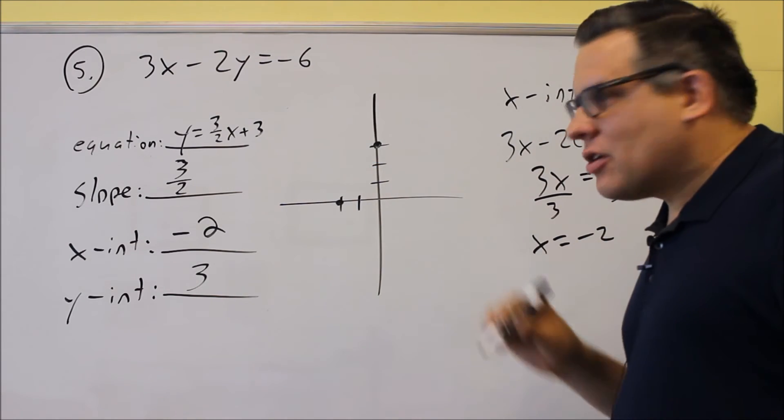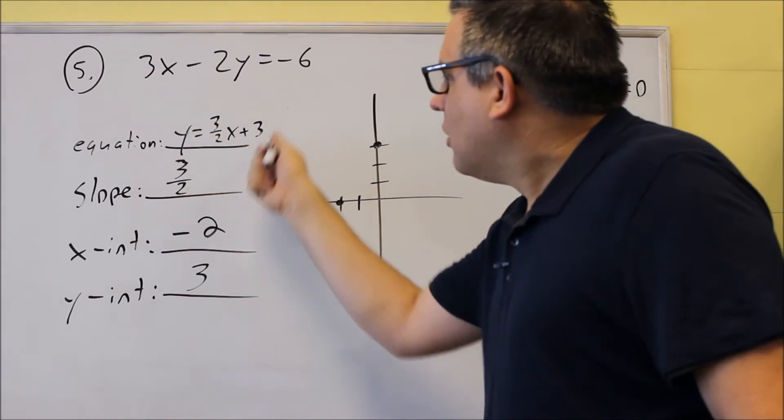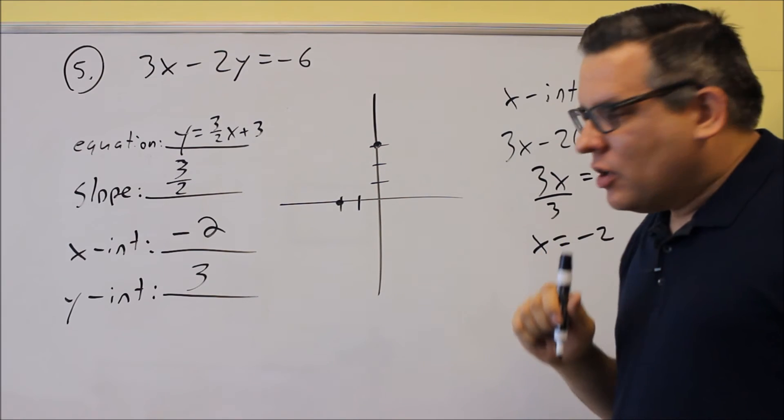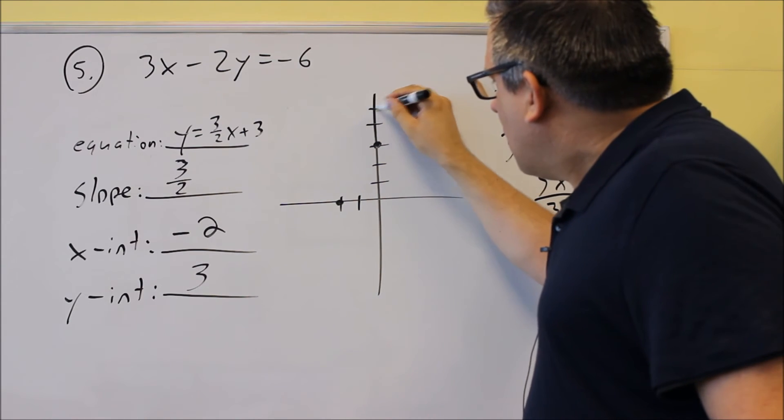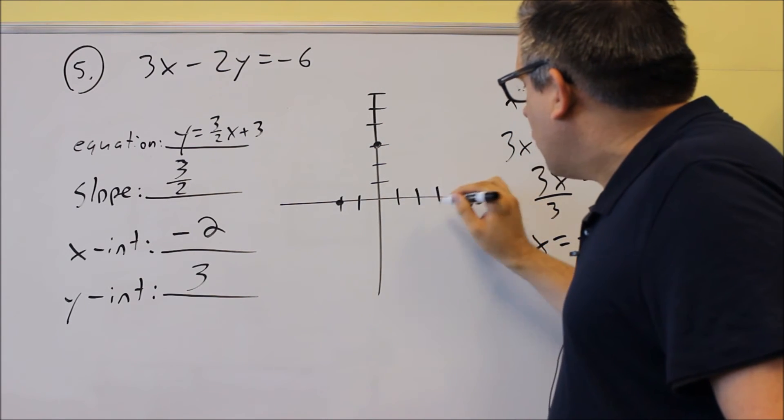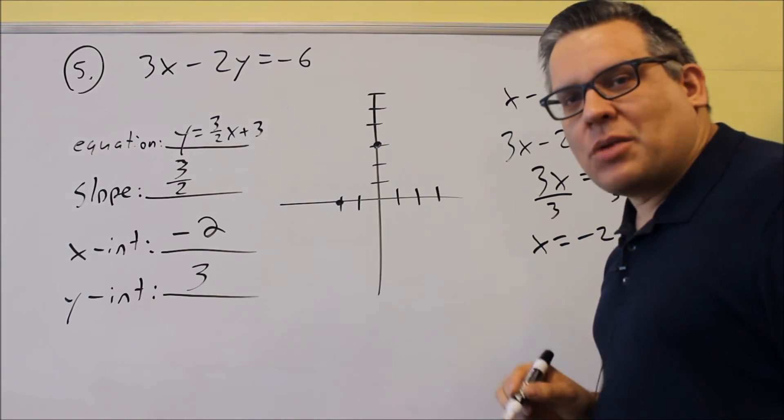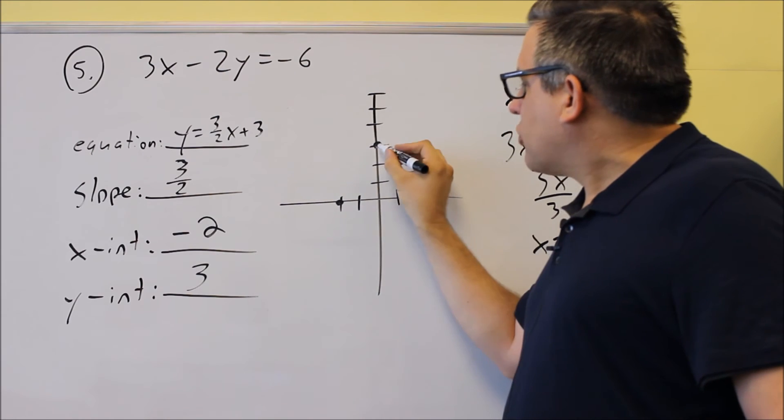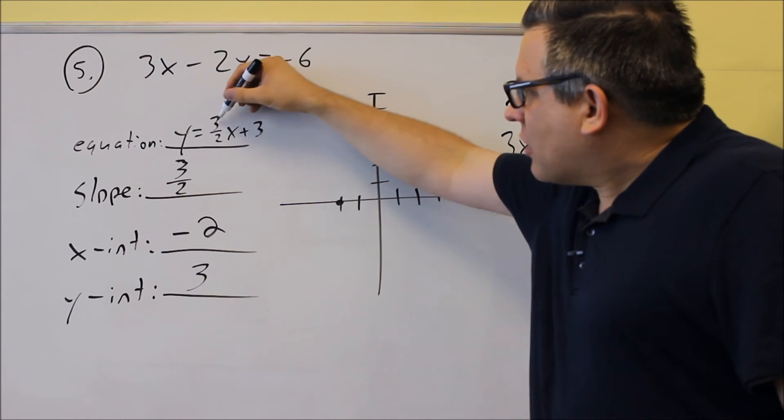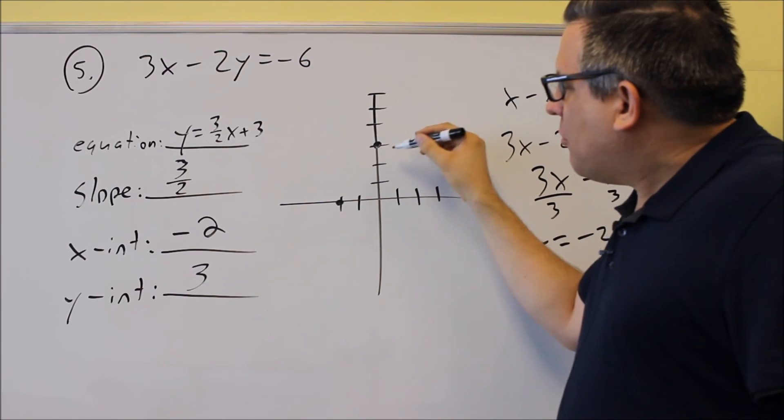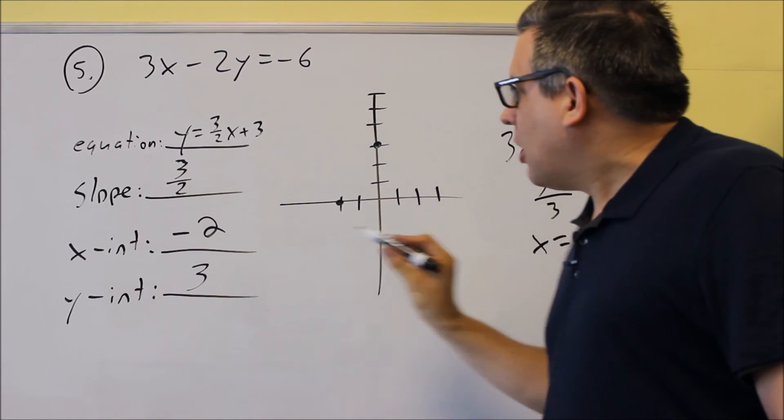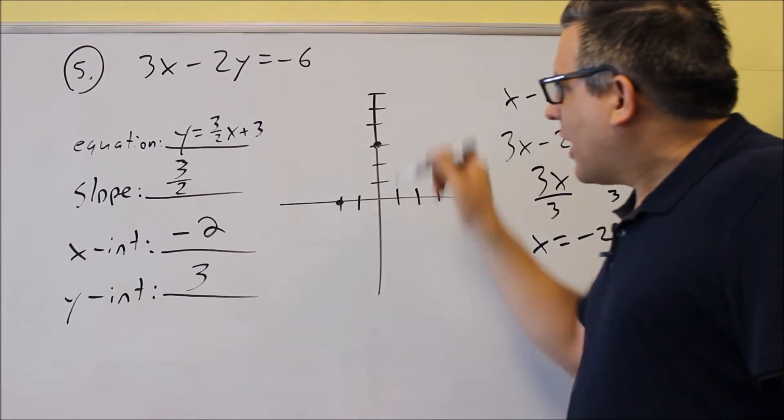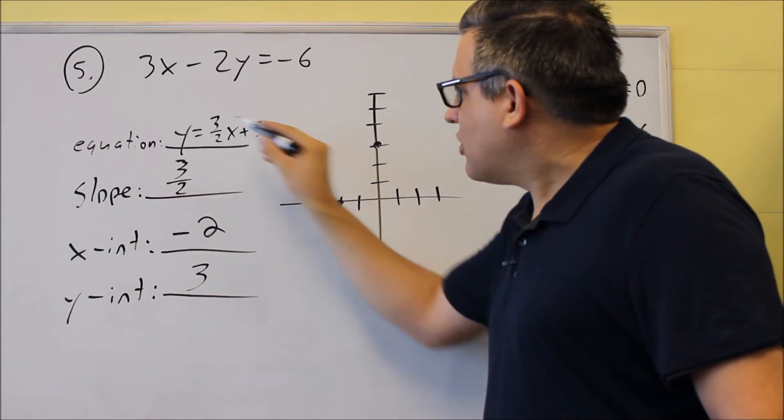Now suppose, besides this, we decided to just use the original one and use graph by using the y-intercept and the slope. Okay, we can do that also. So just to show you that you'll get all different points, and they all form the same line. So let's suppose I use this one. First thing I would do is plot 3, which I already have there. And then the top number is the amount that I move up, and the bottom number is the amount that I'm going to move to the right. So if the top number is negative, I would go down, but since it's positive, I'm going to go up.